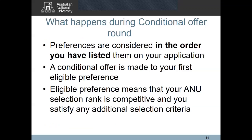So what happens during the conditional offer round? When we receive your application, we will start assessing your topmost preference, and if you're not eligible for an offer for that preference we will move down the list until you become eligible for a conditional offer to one of your preferences. Eligible for an offer means that you have met the co-curricular requirements, your selection rank is competitive for the preference chosen, and you have satisfied any additional selection criteria for this preference.